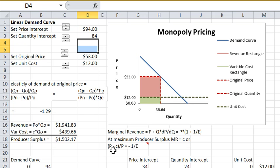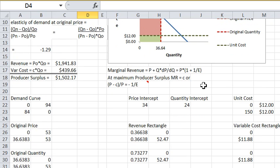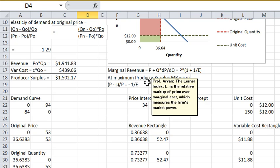The relative markup of price over marginal cost, so price minus marginal cost over p, is equal to minus one over the demand elasticity. And that is called the Lerner Index. And here we have a little note. Let me see if I can scroll down a little bit and you can read the note a little better. It says the Lerner Index is the relative markup of price over marginal cost which measures the firm's market power.